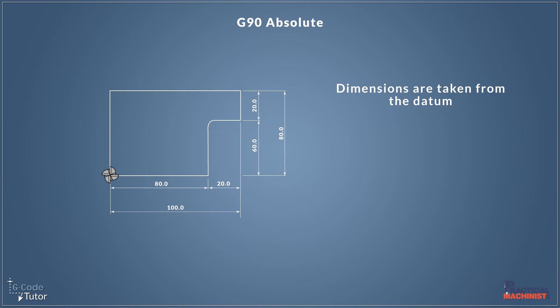So if we were to move our cutter over to this point here we would move the cutter 80 millimetres in the x-axis. Now to move it over to this next point here we would move the cutter a further 20 millimetres, but the dimension we would give the machine is 100 millimetres because the measurement is running from the datum position.